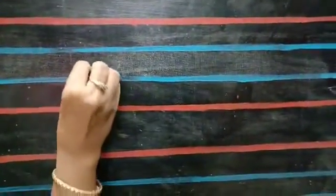Children, while writing cursive letters, you should place your pencil on the second blue line only.